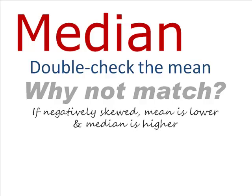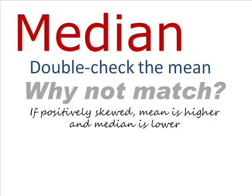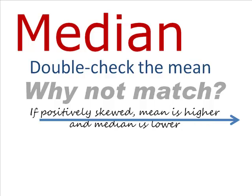A median that is higher than the mean might indicate that there are outlying scores at the bottom of the distribution. If this negative skew is large enough, the mean might not be the best representative of the distribution. Obviously, if the median is below the mean, it could also indicate a skewed distribution — in this case, the outlying scores would be high scores, and the distribution would be positively skewed.